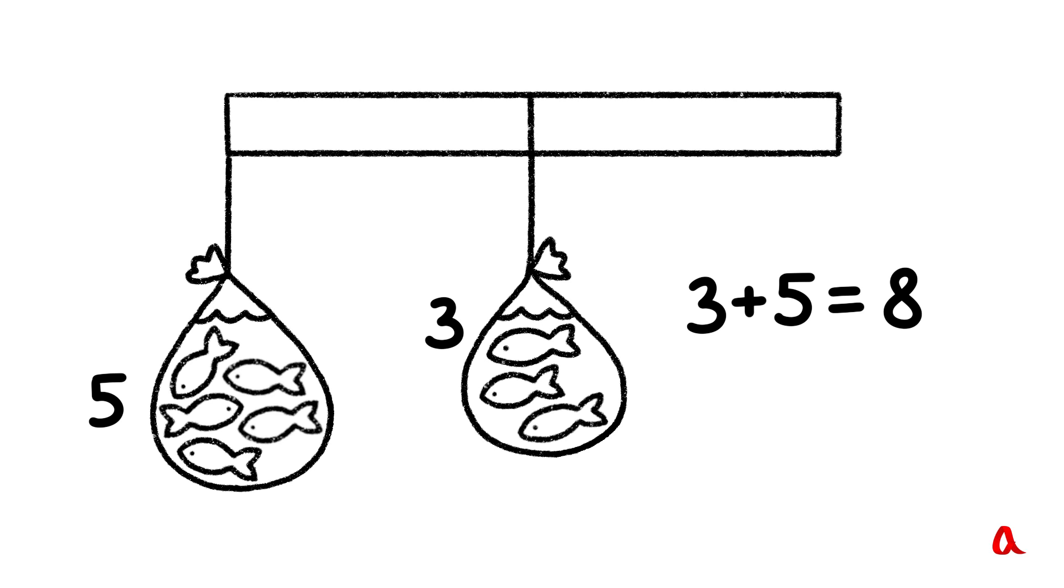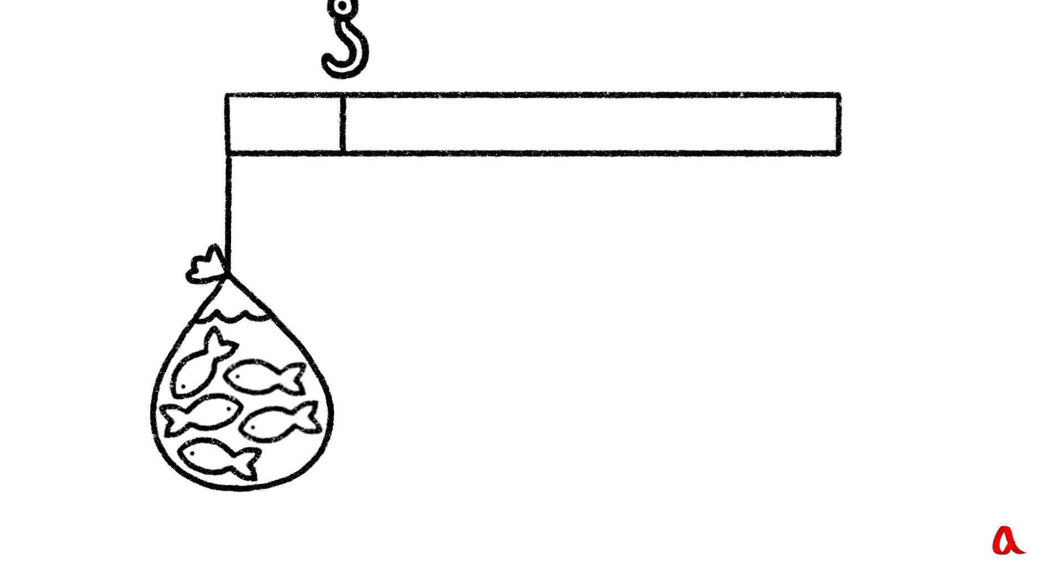Let's divide the distance between the loads into 8 parts and add 3 parts to the 5-unit load and 5 parts to the 3-unit load. Thus, we have found the system's gravity center. This is where the beam should be suspended.